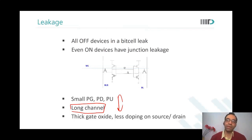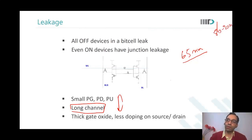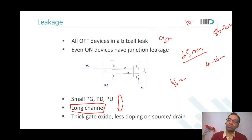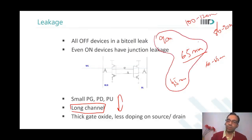As a rule of thumb, typically in 65 nanometer technology the device length is 80 to 90 nanometers. In 45 nanometer technology the length is 60 to 65 nanometers. In 90 nanometer technology the length used to be 100 to 120 nanometers. So never use the minimum length of any given technology as the length of devices in your memory cell.